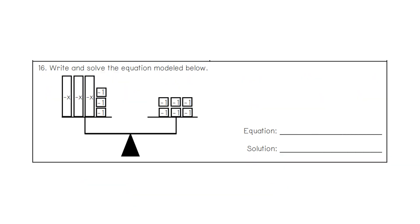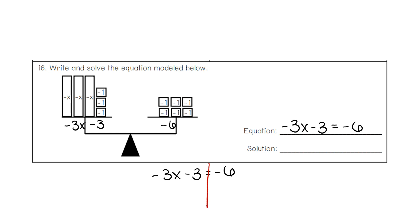We have the equation negative 3x minus 3 equals negative 6. When we go to solve, we work it backwards by doing the opposite — instead of minus 3, we do plus 3. Negative 6 plus 3 is negative 3. Our final step is to divide: negative 3 divided by 3 gives a positive 1 as our solution.